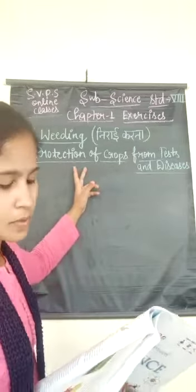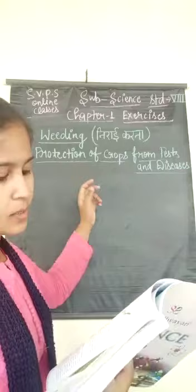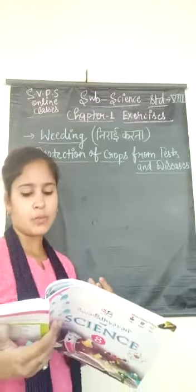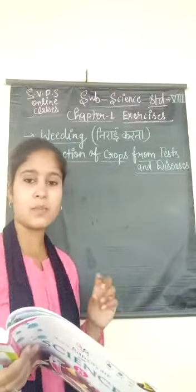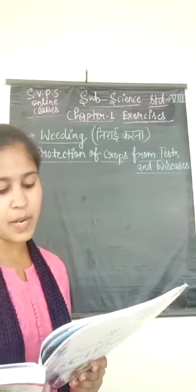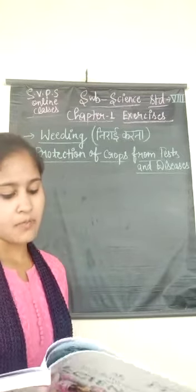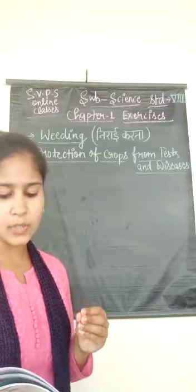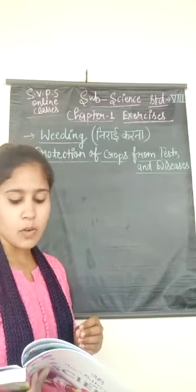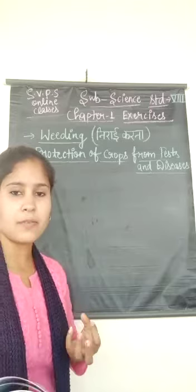The second point is the protection of crops from pests and diseases. Pests are those organisms that damage crops and make them unfit for human consumption.